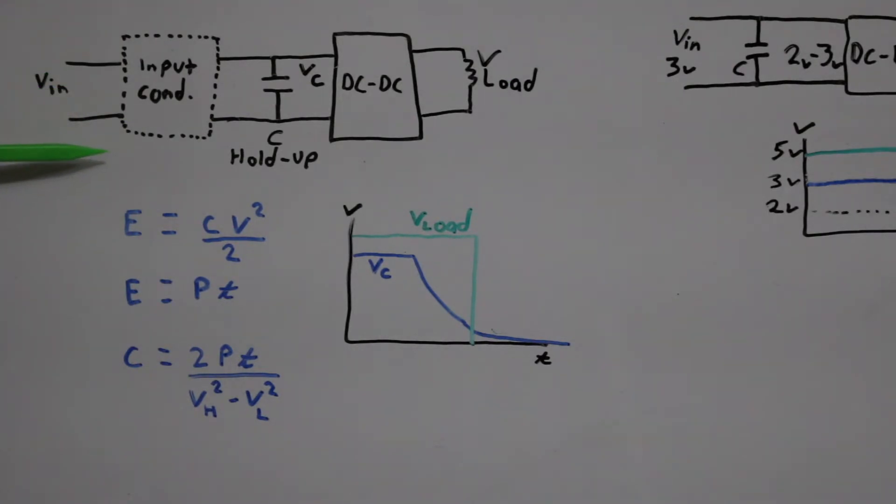Such as in aircraft power systems that are running on a nominal 28 volts DC. The system may need to tolerate momentary power interruptions up to 50 milliseconds and continue delivering power to the load from the holdup capacitance.